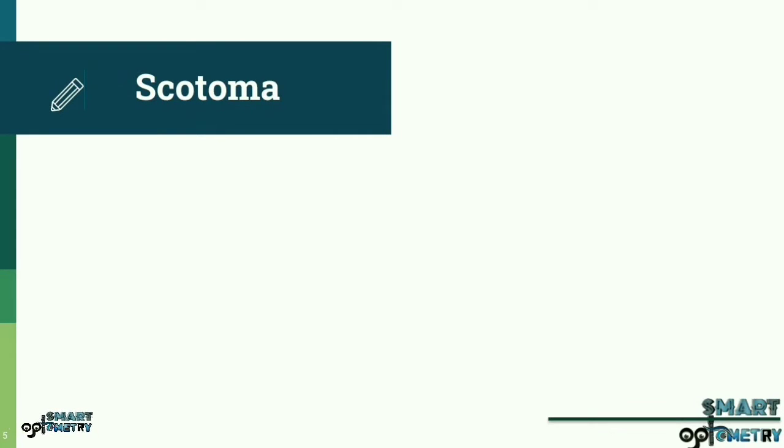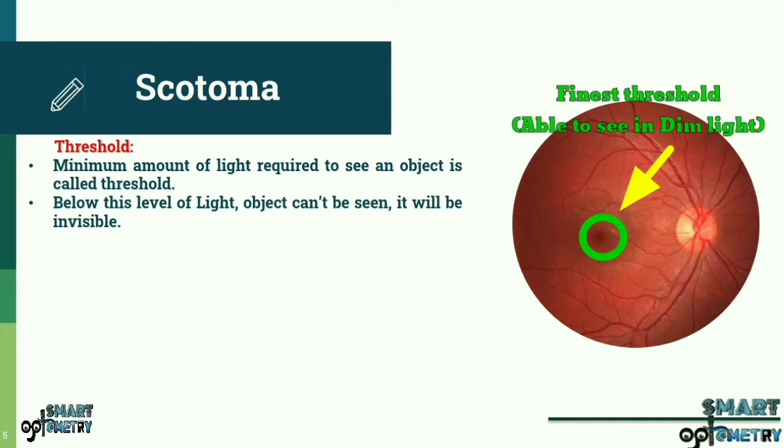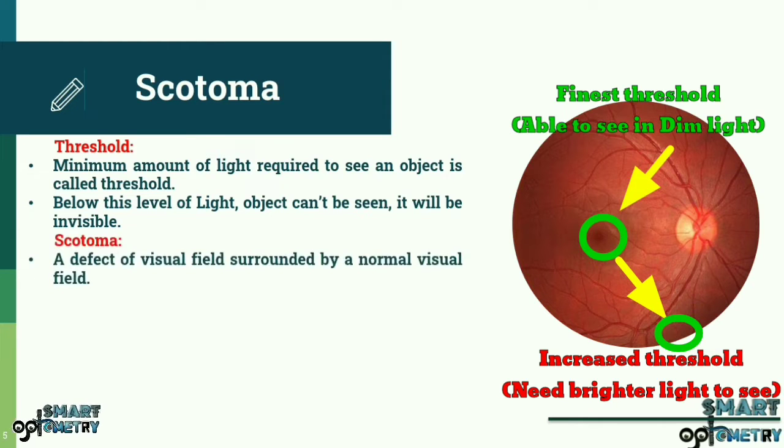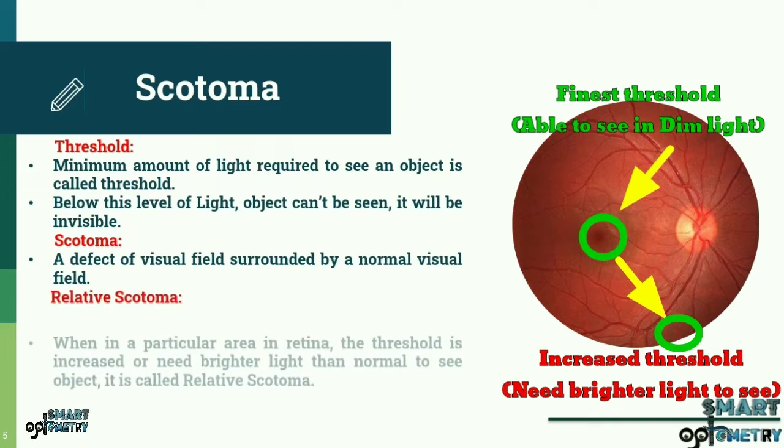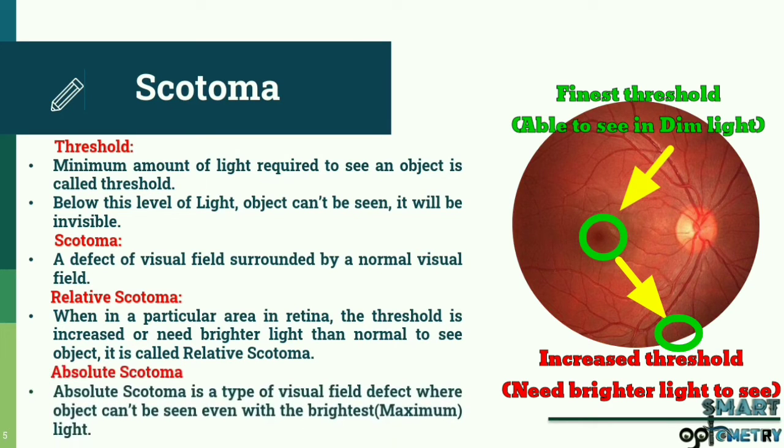Scotoma. Before starting procedure, we need to know about scotoma. To know what is scotoma, we need to know about what is threshold. Threshold: minimum amount of light required to see an object is called threshold. Below this level of light, object can't be seen. It will be invisible. In our retina, fovea has the finest threshold. Even with dim light, object can be seen. When we move from fovea to periphery, threshold increases. We need brighter light to see object. Scotoma: a defect of visual field surrounded by a normal visual field. Relative scotoma: when in a particular area in the retina, the threshold is increased or need brighter light than normal to see object, it is called relative scotoma. Absolute scotoma is a type of visual field defect where object can't be seen even with the brightest, maximum light.